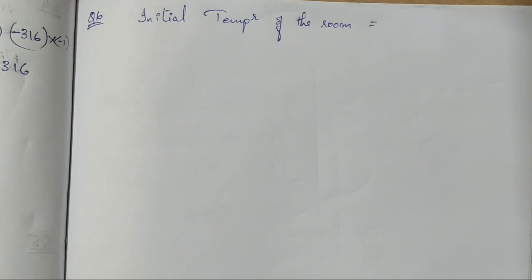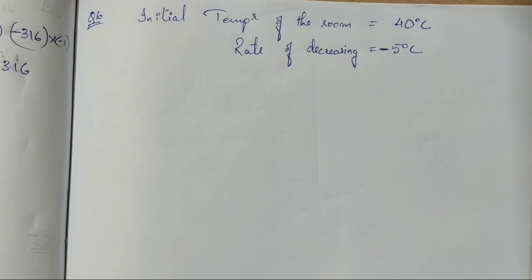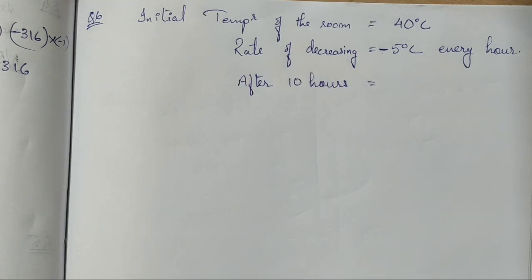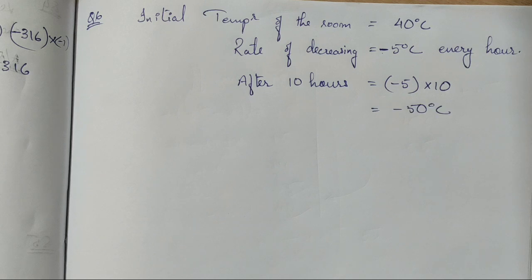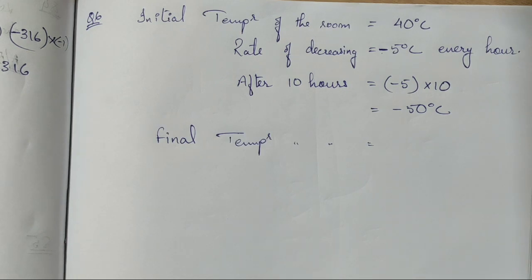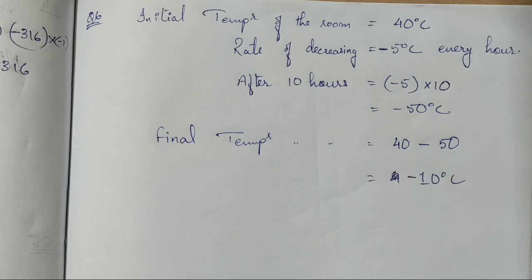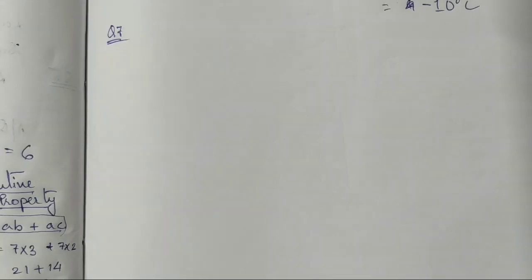Question 6 is a word problem about temperature. The initial room temperature is 40°C and it is lowered at the rate of 5°C per hour, so we use -5 per hour. In 10 hours the temperature change is -5 × 10 = -50°C. The final temperature is 40 + (-50) = -10°C.